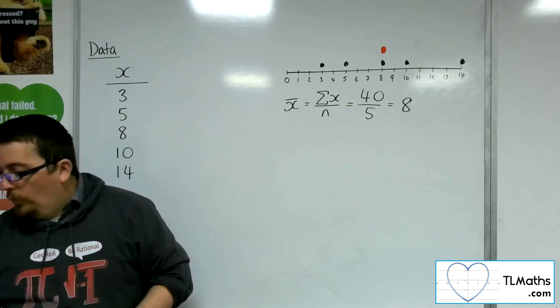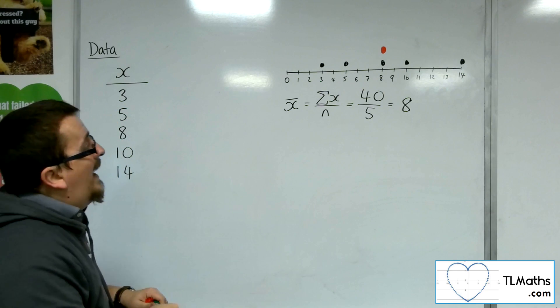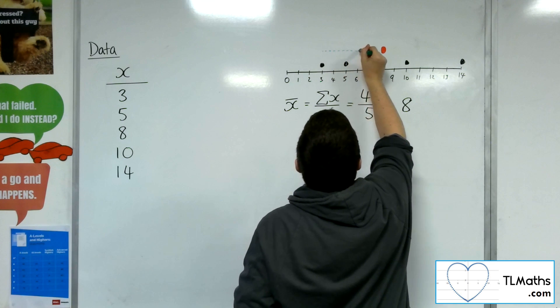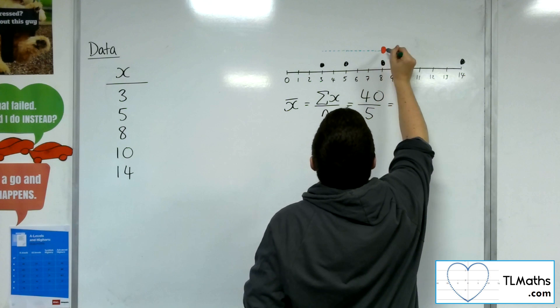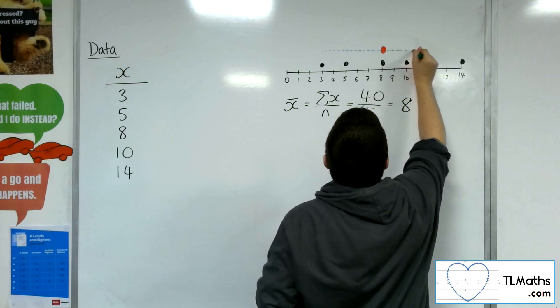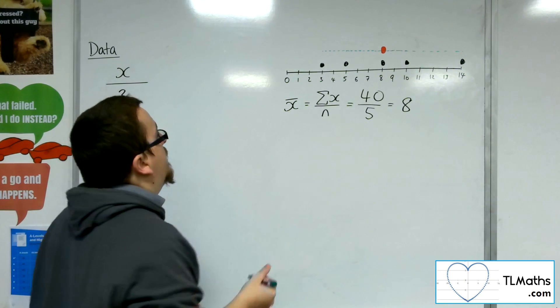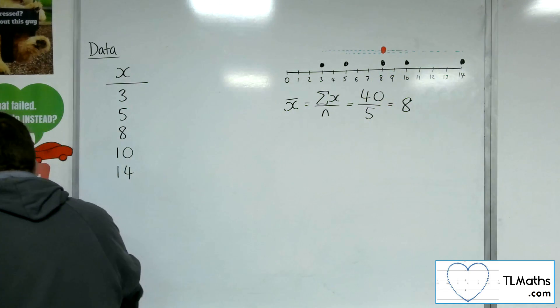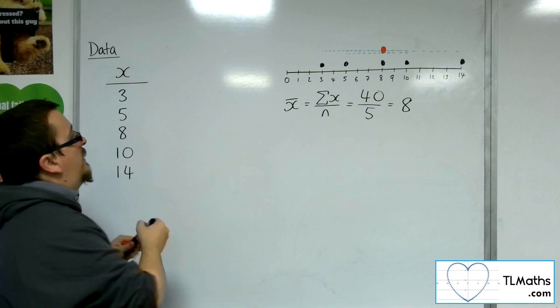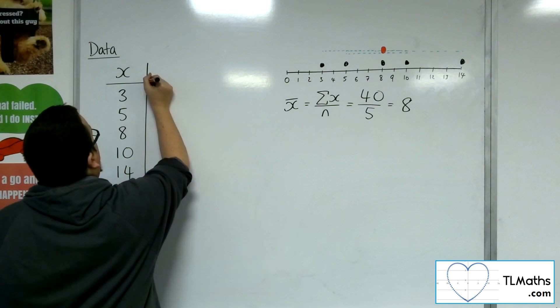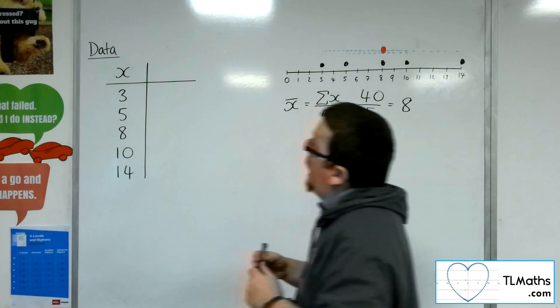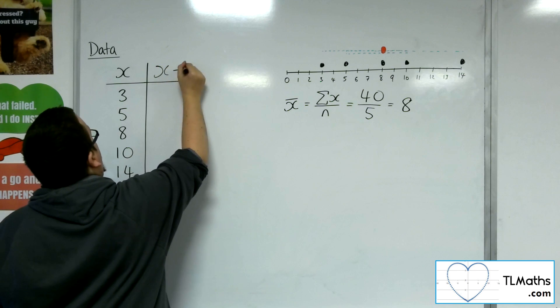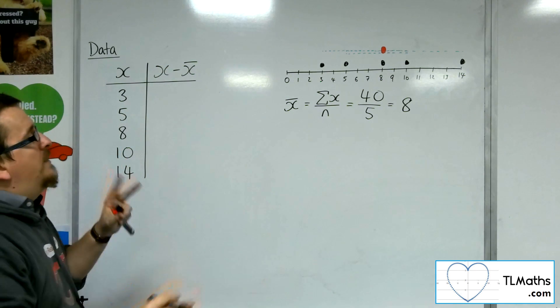So now what I want to do is find out how far, on average, each of these data points are away from the mean. So I want to find the average of those distances. That's the idea. So what I would need to do is I would really need to find the difference from each of those data points to the mean.